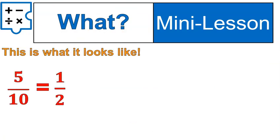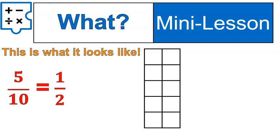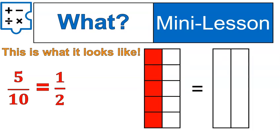Here is what it looks like physically. If I have a fraction of 5 over 10, here are 10 pieces. I'm going to highlight 5 of them. It's exactly the same as having 2 pieces and filling just 1. Notice the size of that red box is exactly the same. It does not change the value. It just makes it in a simpler form.